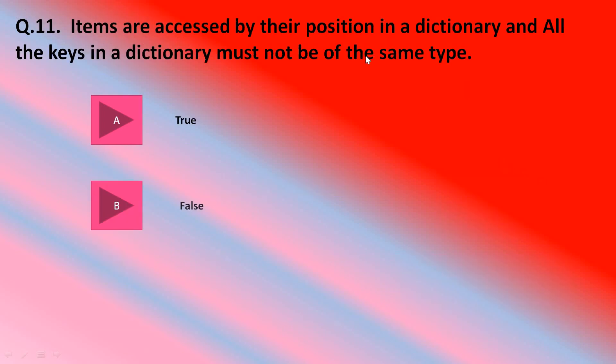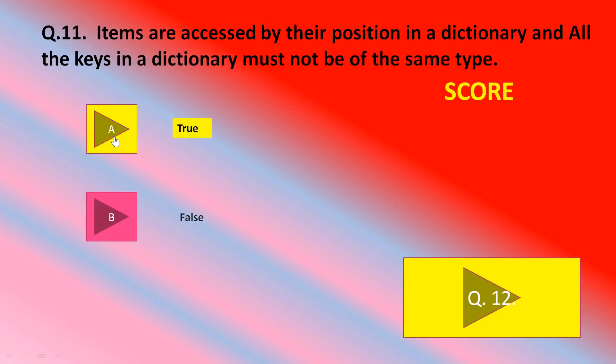Only 11 and 12 are left. Items are accessed by the position in a dictionary, and all the keys in a dictionary must not be of the same type. Is this true or false students? Yes, it is true. Two marks again.